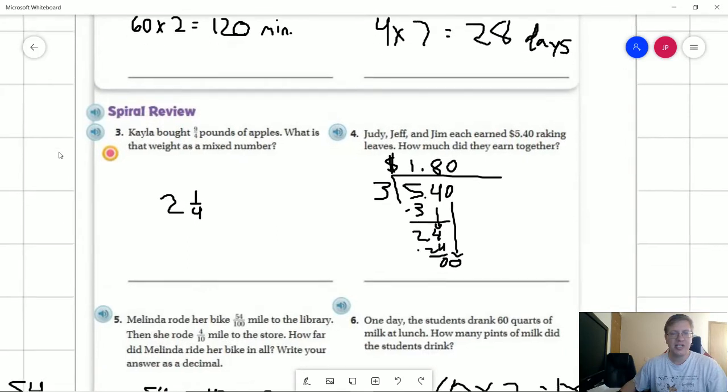And for number three, Kayla bought nine quarters of a pound of apples. What is that weight as a mixed number? So we can say that we can make two groups of four. And so that would give us our whole number. We're going to have one group left over. And so our mixed number would be two and one quarter.